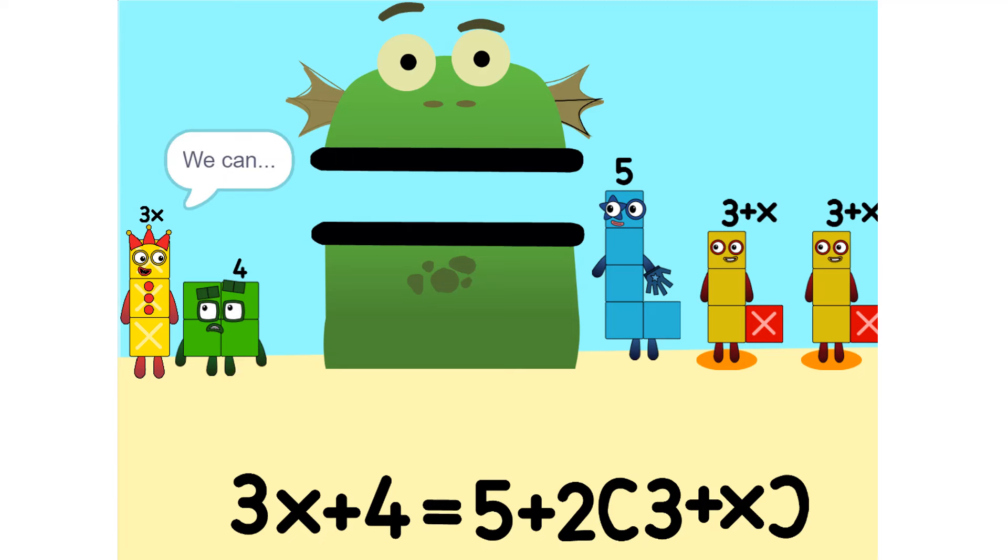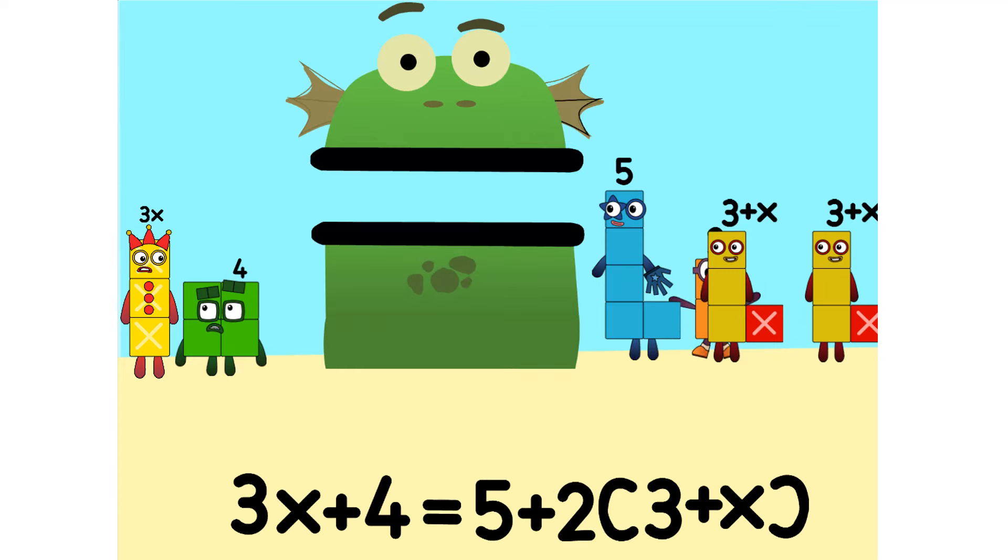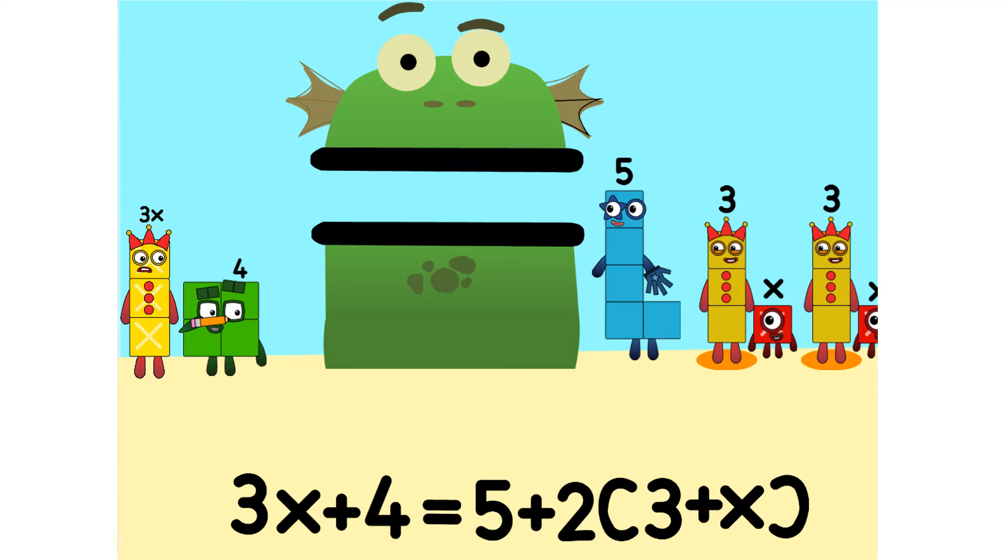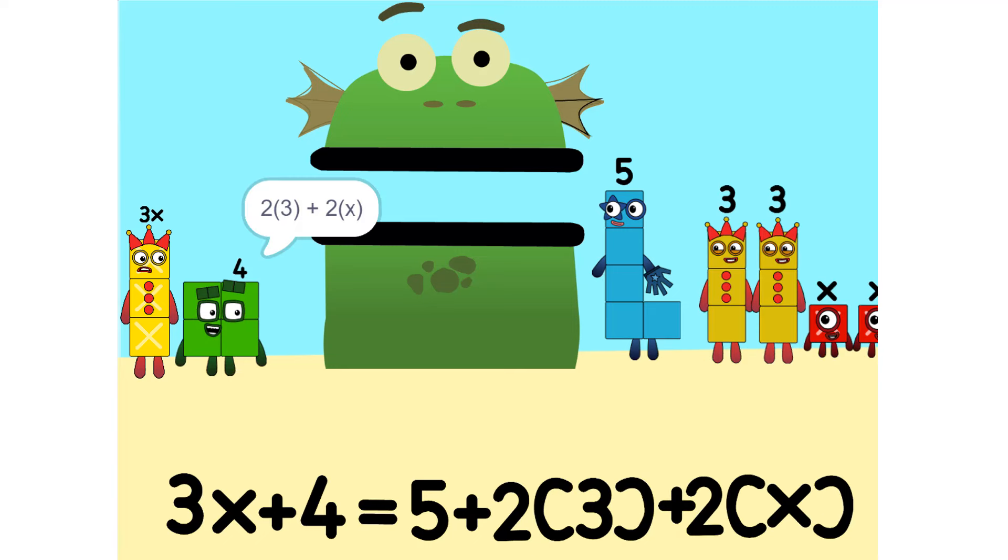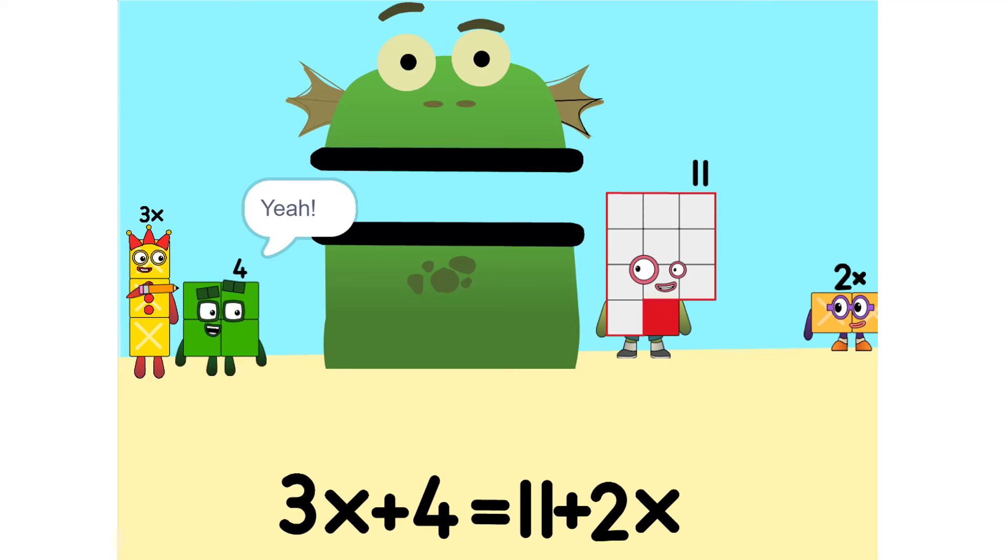I see something. We can add these. Why did that happen? Because the 2 is connected to the 3 plus x. So it's like adding apples and oranges. So what do we do? See the 2 times 3 plus x? That's the same as 2 times 3 plus 2 times x, which is 6 plus 2x. And 5 plus 6 is 11.